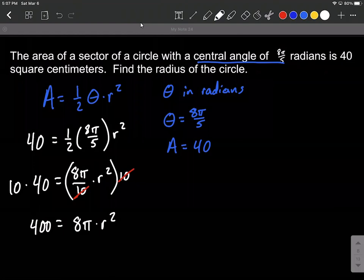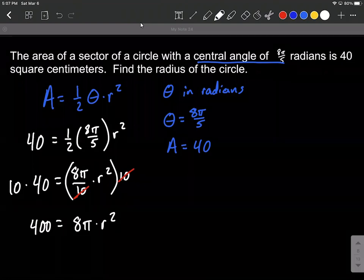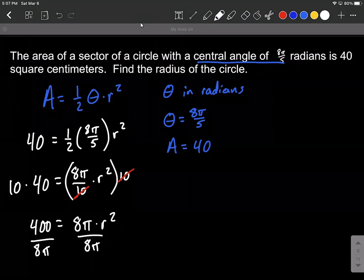Now remember, our goal is kind of get that r squared on one side by itself, make this into a power equation. So we want to get rid of the 8π. It's connected with multiplication right now, so let's use division to move that to the other side. So let's divide both sides by 8π.